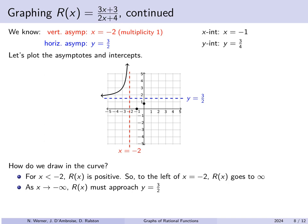As x approaches minus infinity, r of x must approach the horizontal asymptote of y equals 3 halves, so we sketch it approaching that. One might ask whether the graph crosses y equals 3 halves — setting r of x equal to 3 halves reveals there is no solution, so the graph never crosses it. In our courses we typically don't require that level of detail, so drawing it approaching 3 halves from one side is perfectly fine.